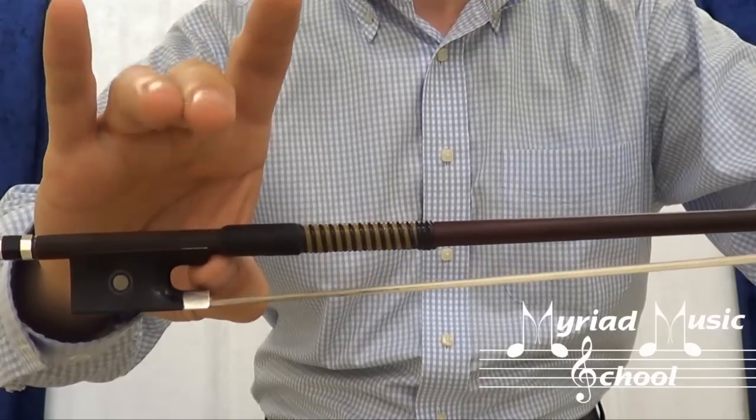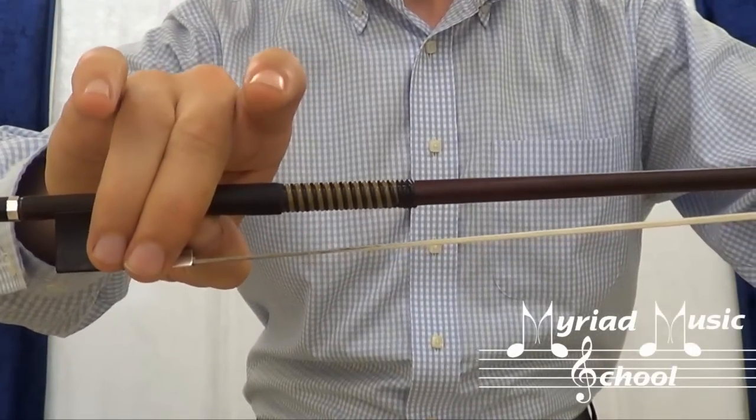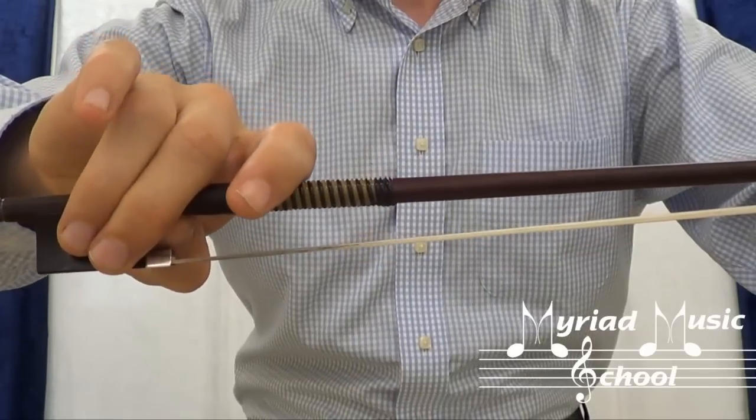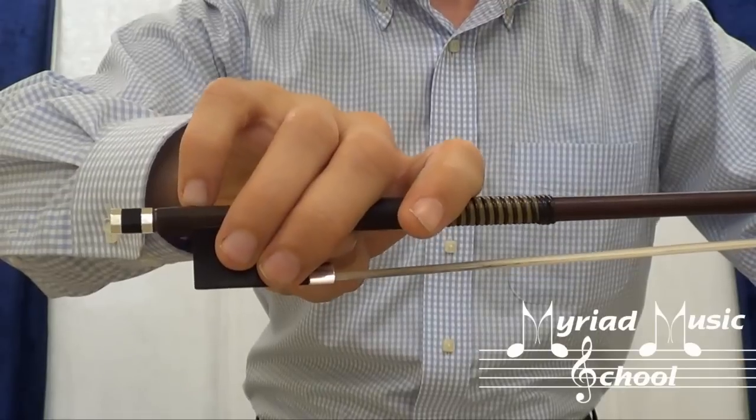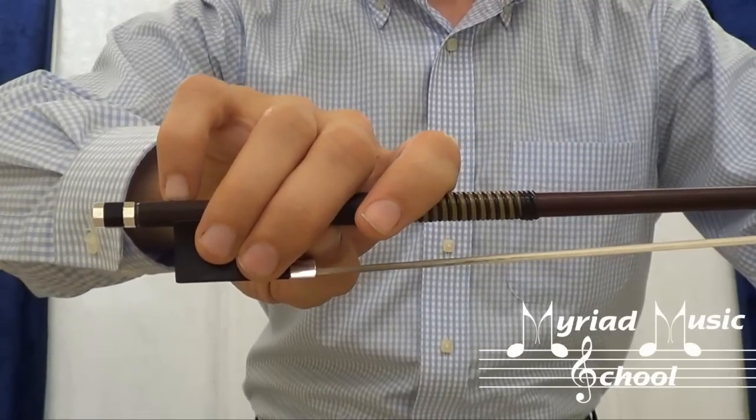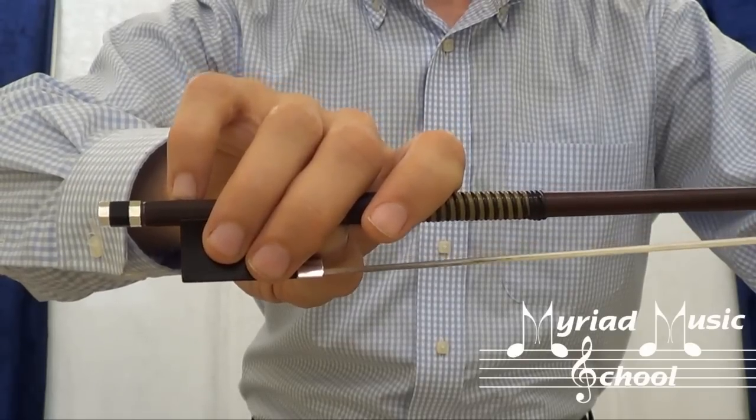Next, allow your second and third fingers to droop over the bow, your index finger to lie on its side, and your pinky to rest on top. This is how you hold the bow.